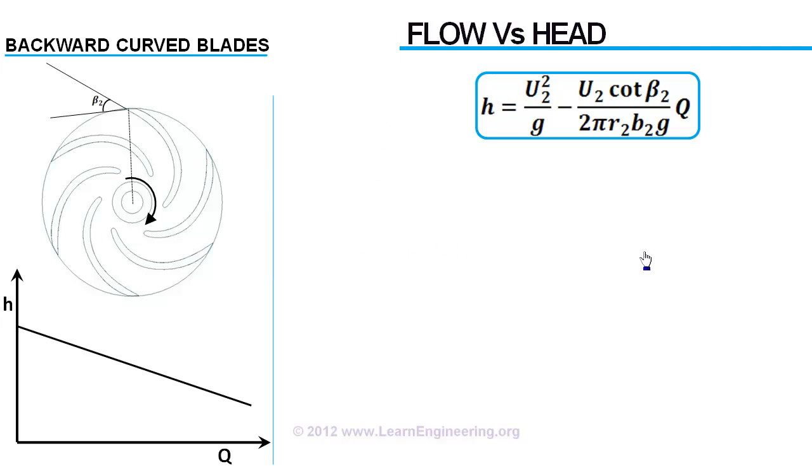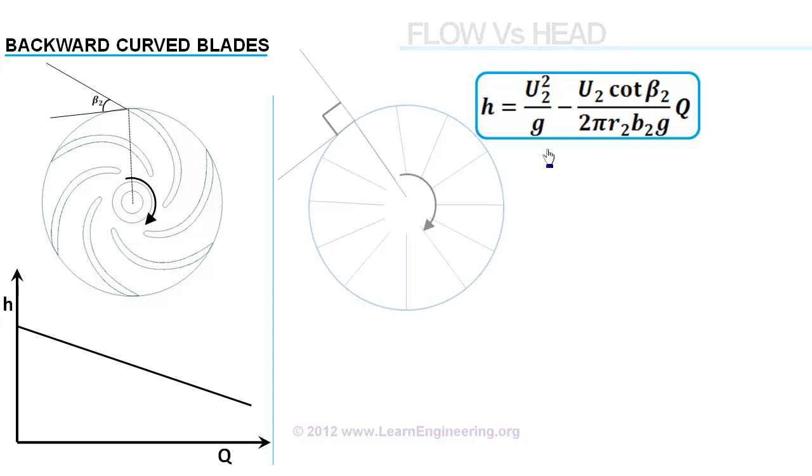If beta is 90 degrees, with flow rate there is no change in pressure rise because this term is zero here. They are called radial type.